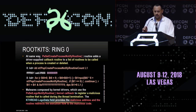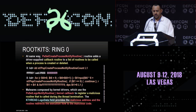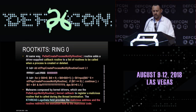PsSetLoadImageNotifyRoutine callback methods are used to register a malicious routine that's called during thread termination. In this case, the malware changed the KTHREAD.ApcState field to provide a malicious address, and the routine redirects the execution flow to the malicious code. It's a very nice and different trick.